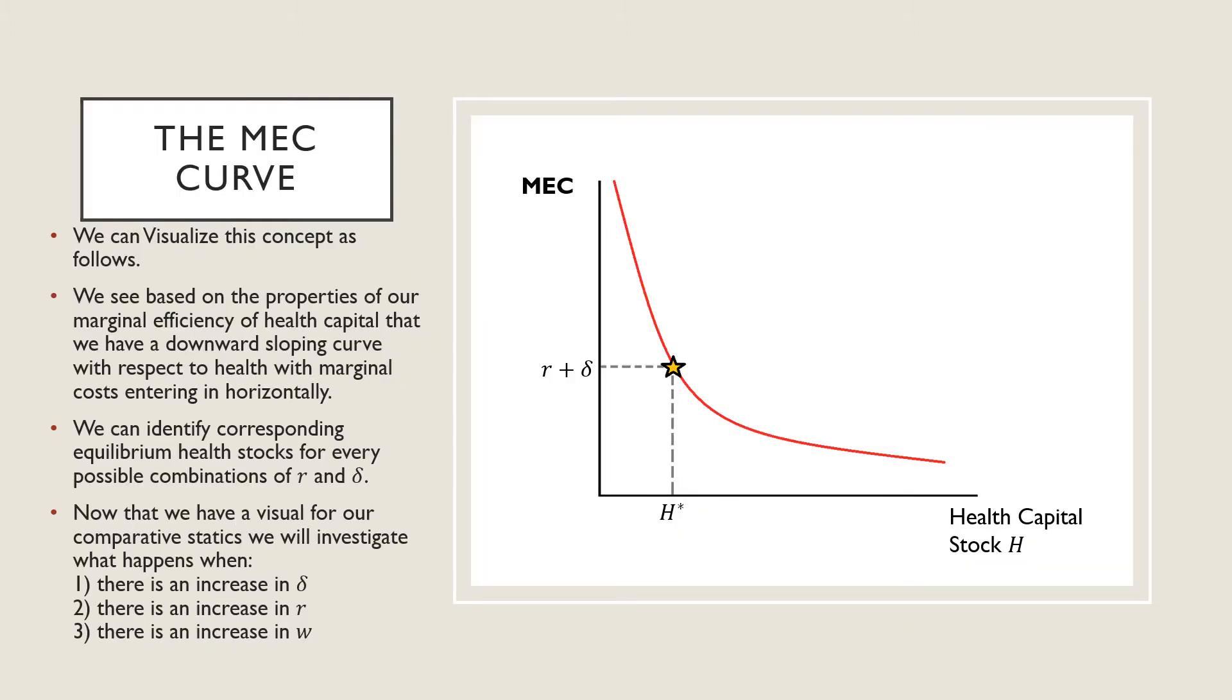In terms of visualizing that equilibrium concept, we get the following picture. We see that based on the property of our marginal efficiency of health capital, we should have a downward sloping curve with respect to health stock, and marginal costs will enter horizontally there since they are invariant to the actual health capital stock. We can identify a corresponding equilibrium health stock for every possible combination of R, which is our rate of return on the market or discount factor there, and delta here.